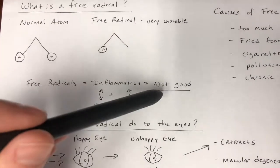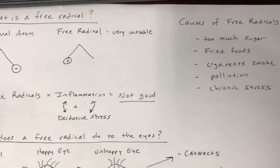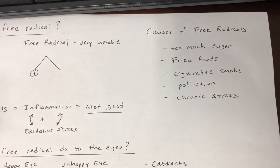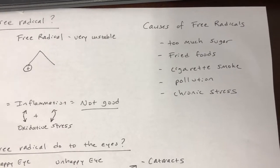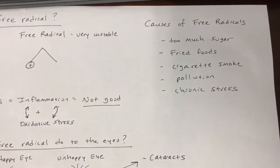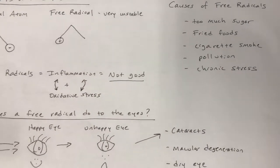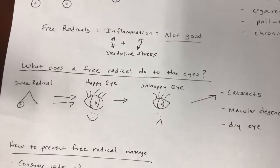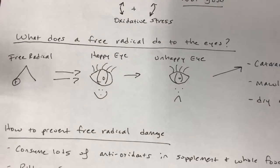When free radicals attach to your cells — say, in your eyes — it causes inflammation and oxidative stress, which is not very good for your eyes. Some of the causes of too many free radicals in your body are eating too much sugar, too many fried foods, cigarette smoke, pollution, chronic stress, and the list is a pretty long one.